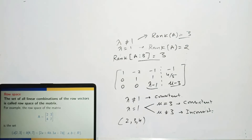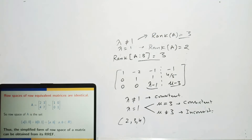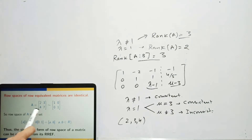The row space of a matrix is the set of all linear combinations of its row vectors. For a matrix with rows [2, 3] and [4, 7], the row space is {A·[2,3] + B·[4,7] | A, B ∈ ℝ}. Important: row spaces of row equivalent matrices are identical, so you can find the row space from the RREF, which is simpler.